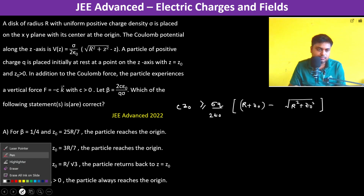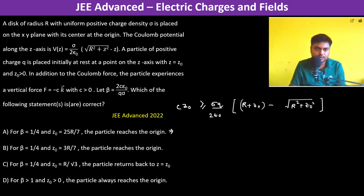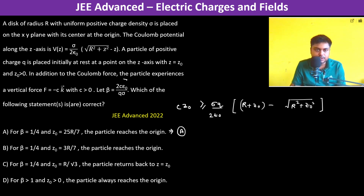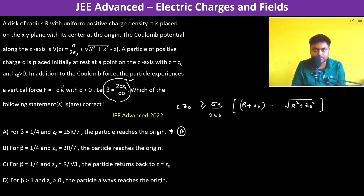Now let us check the options. Beta is defined as 2Cε₀/(q·sigma), so rearranging: z₀ ≥ (1/beta)·[R + z₀ − √(R² + z₀²)].